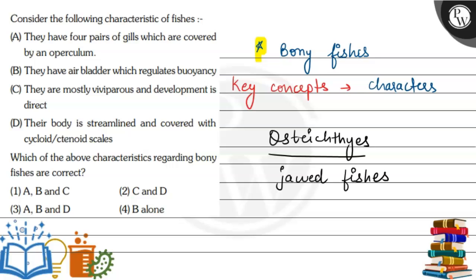They are jawed fishes. Why are they called bony fishes? Because their endoskeleton is bony. So they have a bony endoskeleton. Now when we talk about characteristics, yes, they have four pairs of gills covered by an operculum on both sides, each side. So this statement is correct or we can say true.